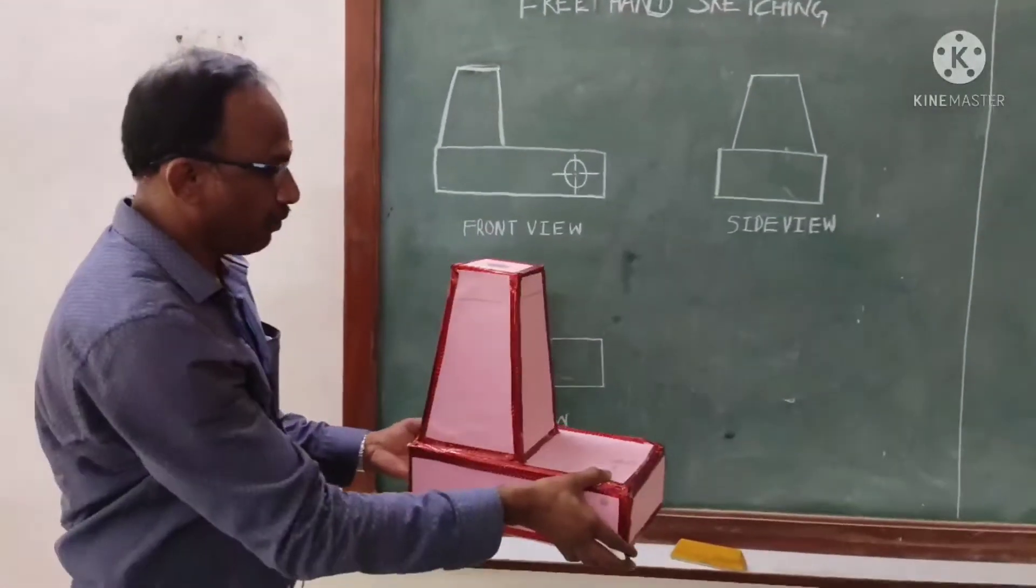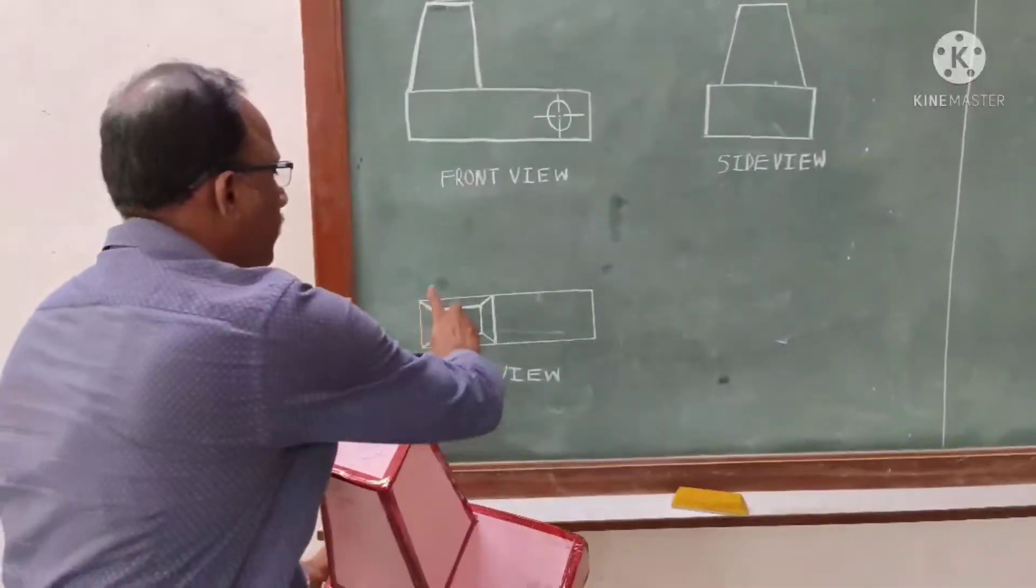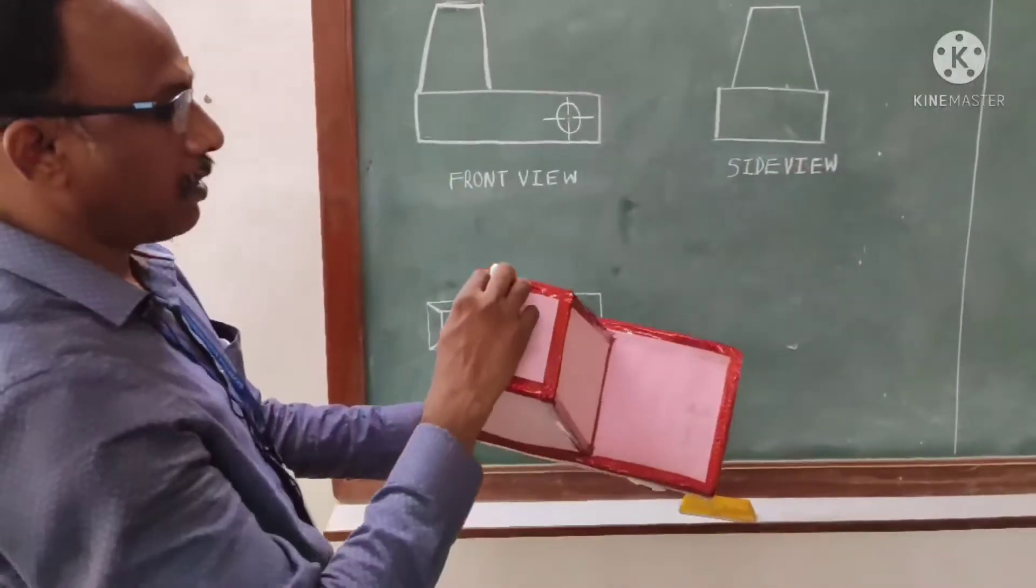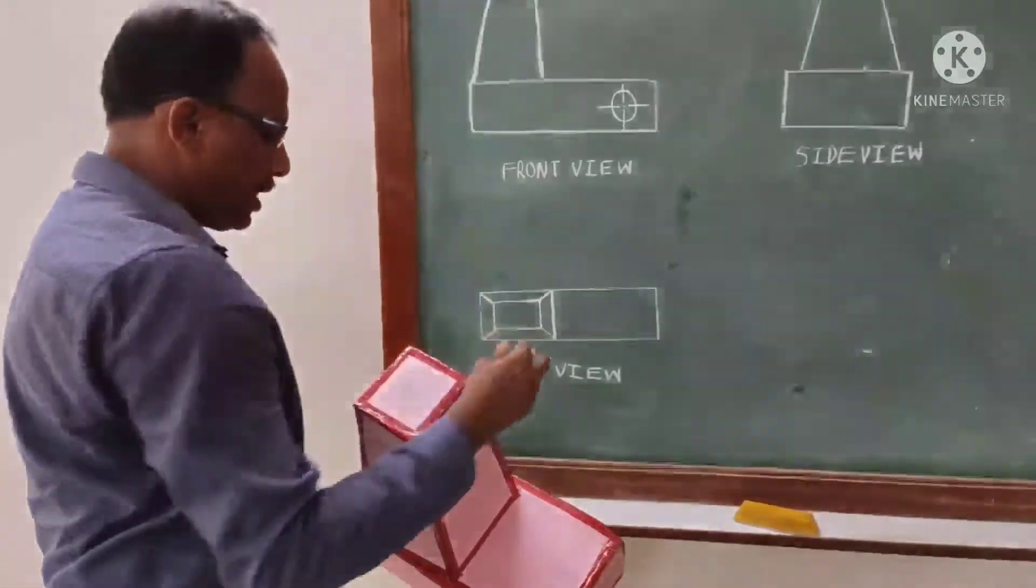Coming to the top view, this is your top view. The bottom rectangle, we will draw like this. Then the top base, this tapered one, it will be seen as two rectangles.